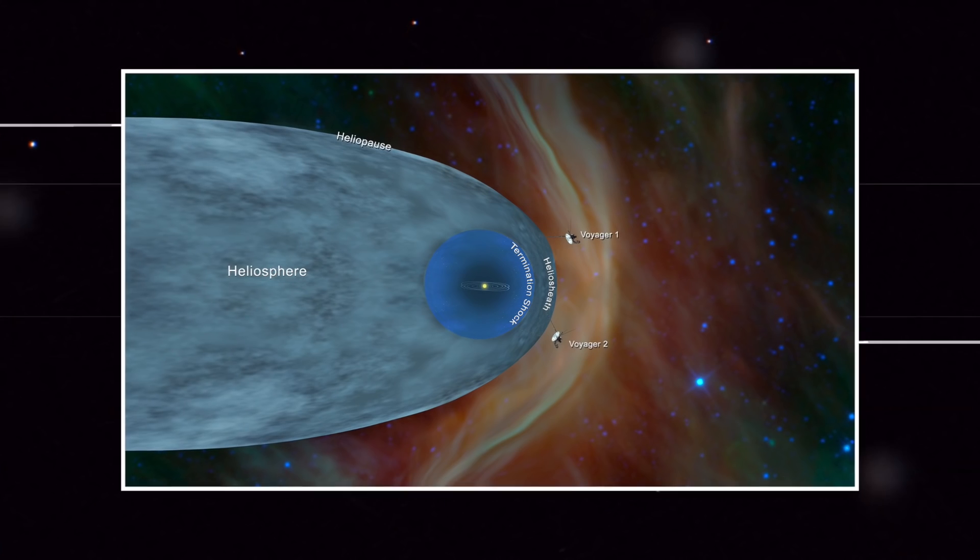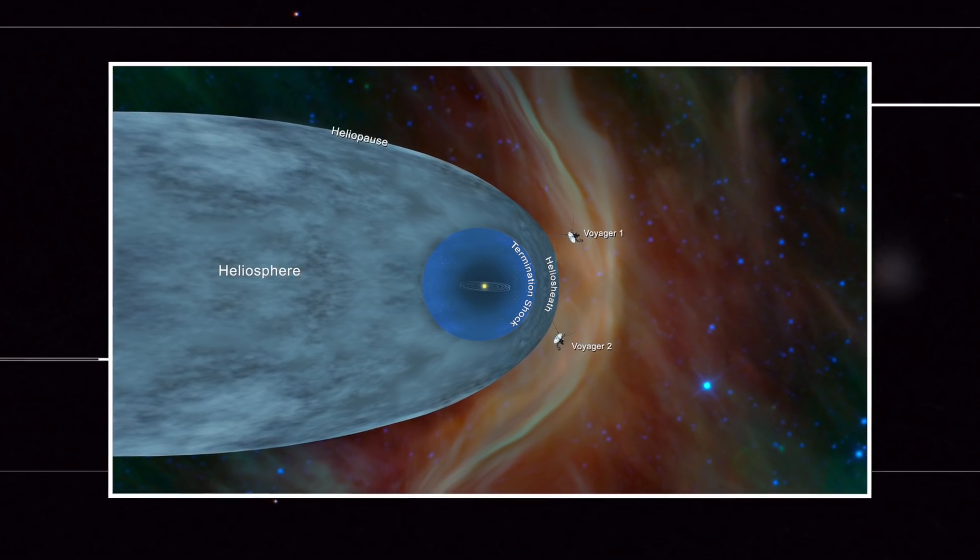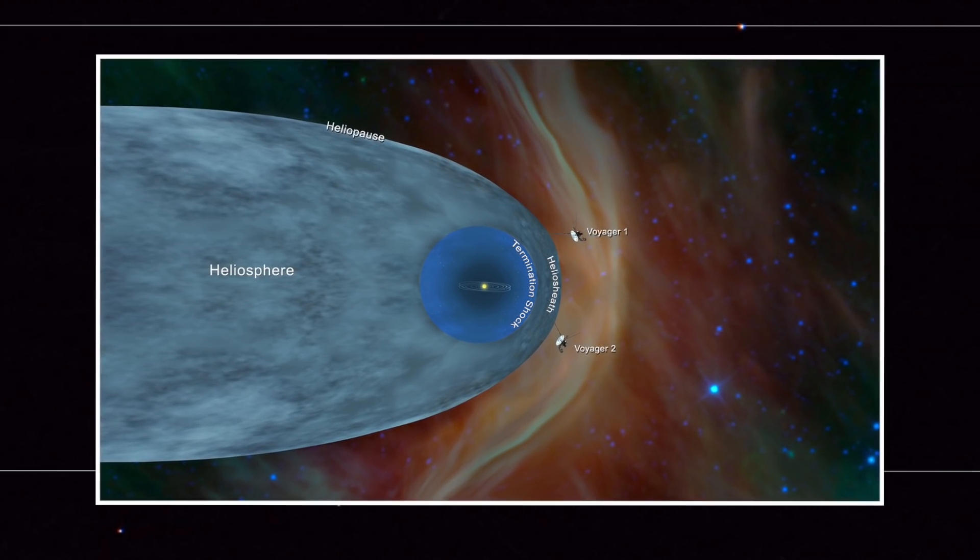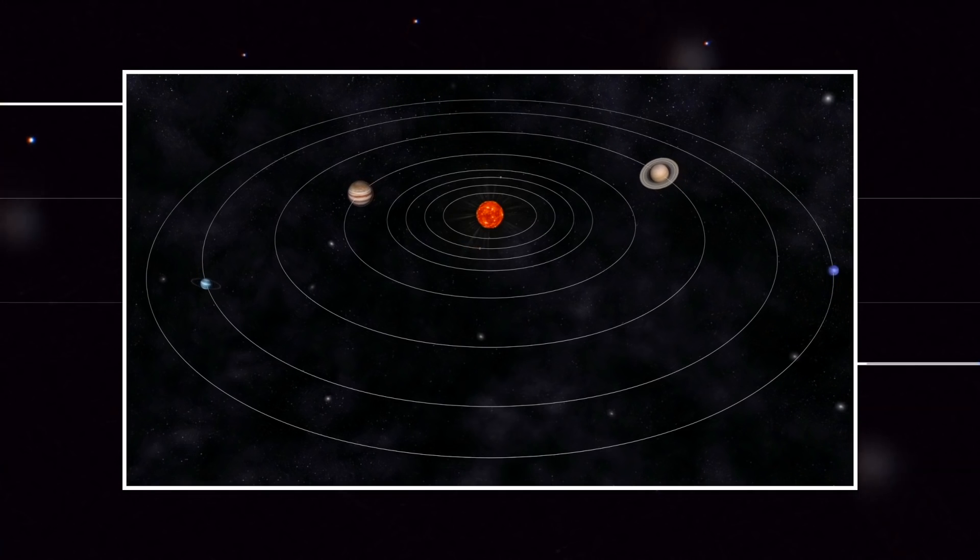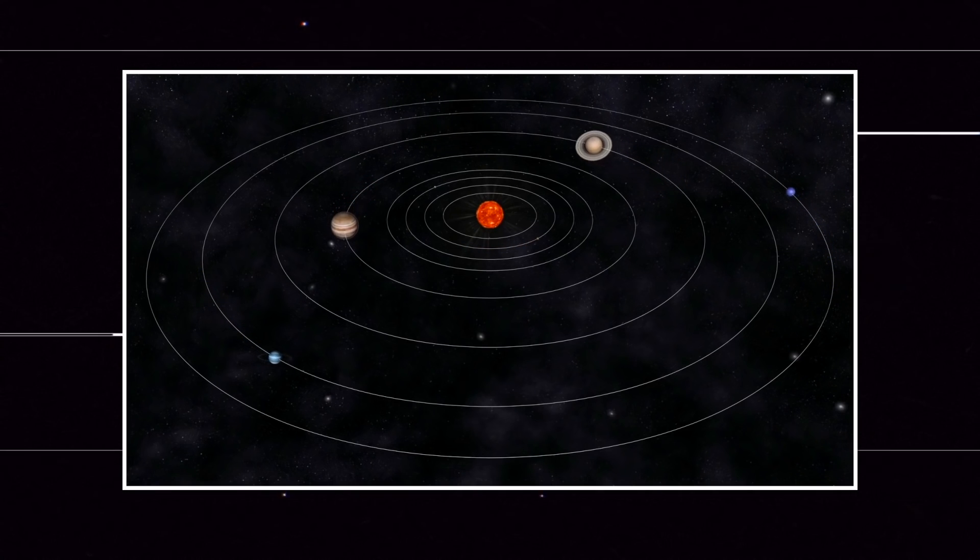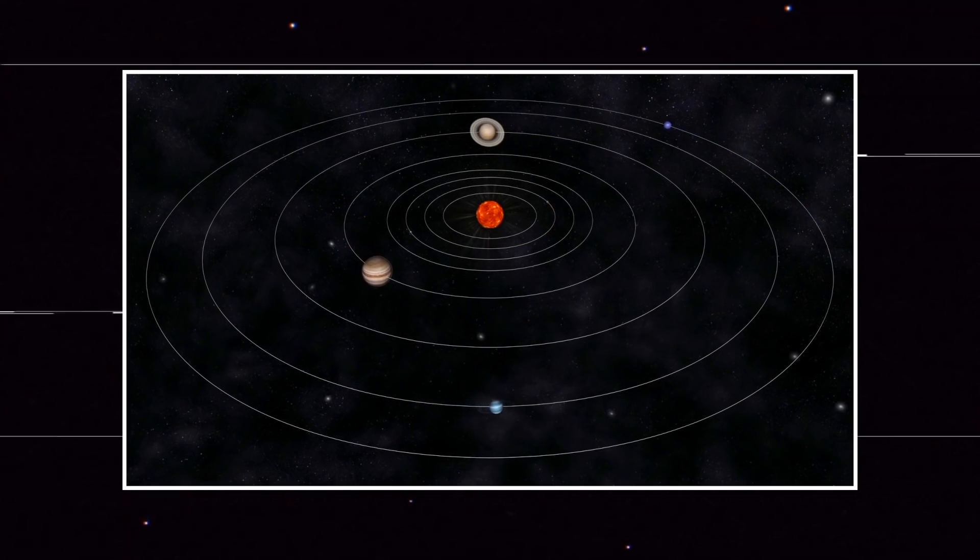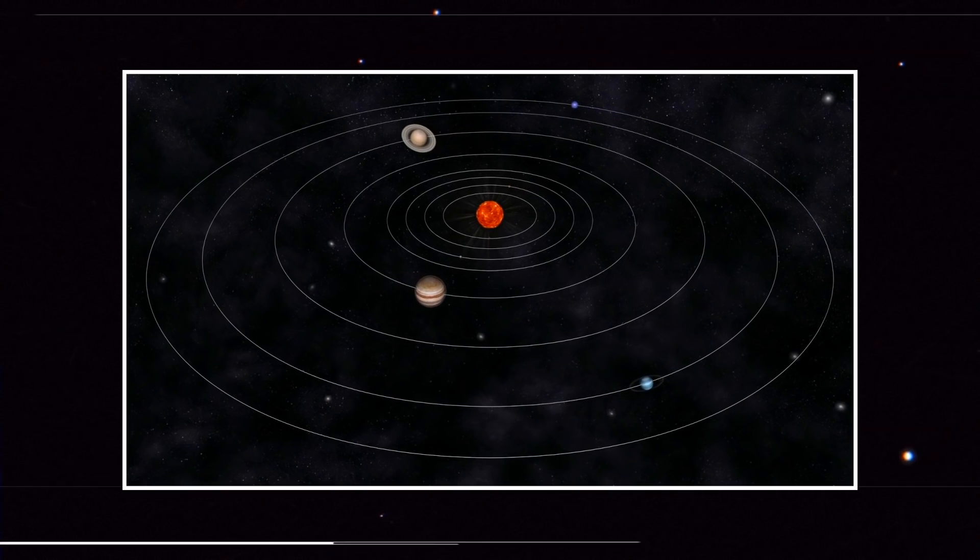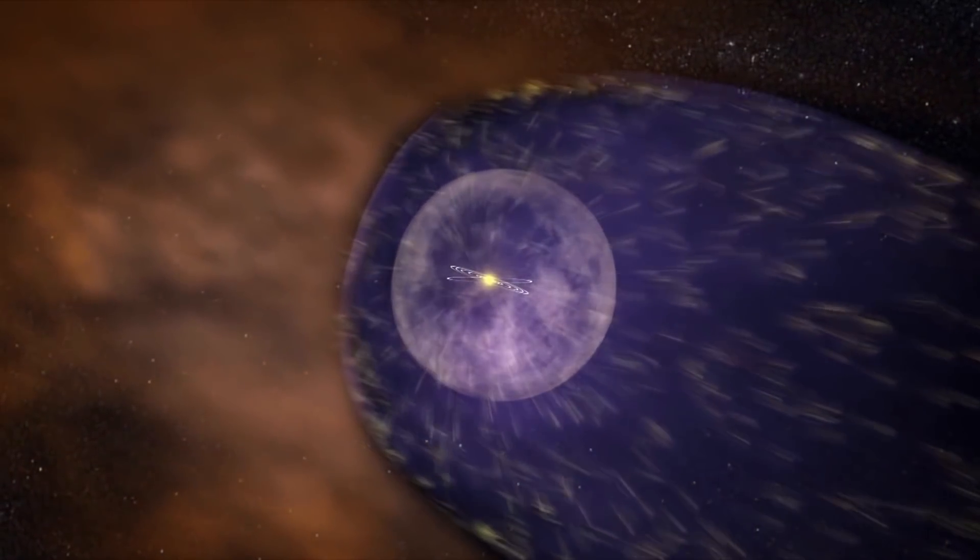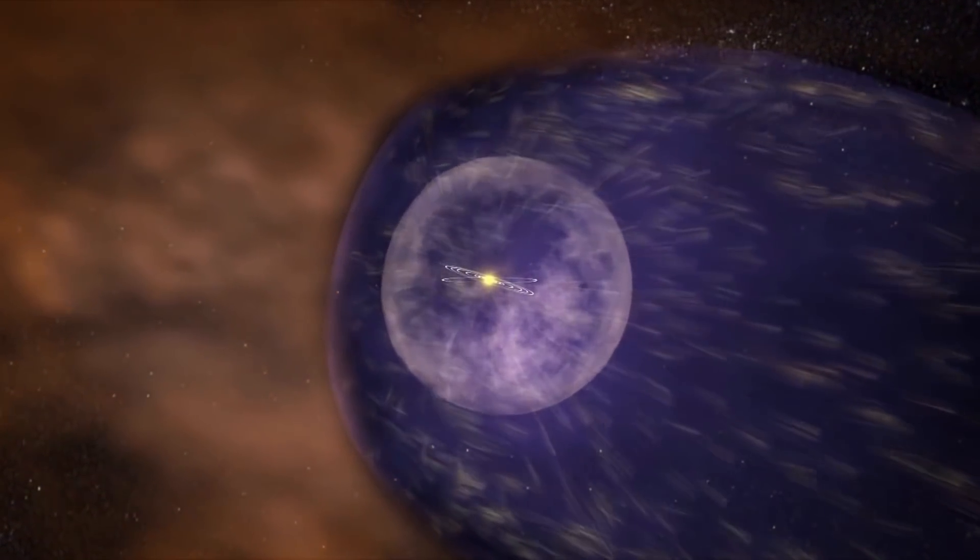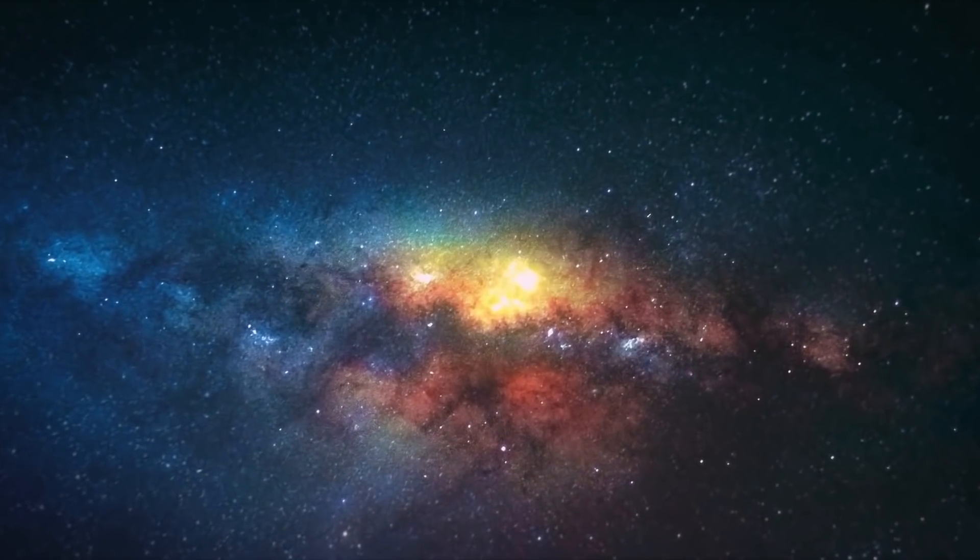To understand it further, first you need to know the space boundaries. The solar system's edge can be defined by a few different boundaries. Of these, what Voyager probes crossed is the heliopause. This boundary is defined by the solar winds that are coming from the sun, the center of our solar system.